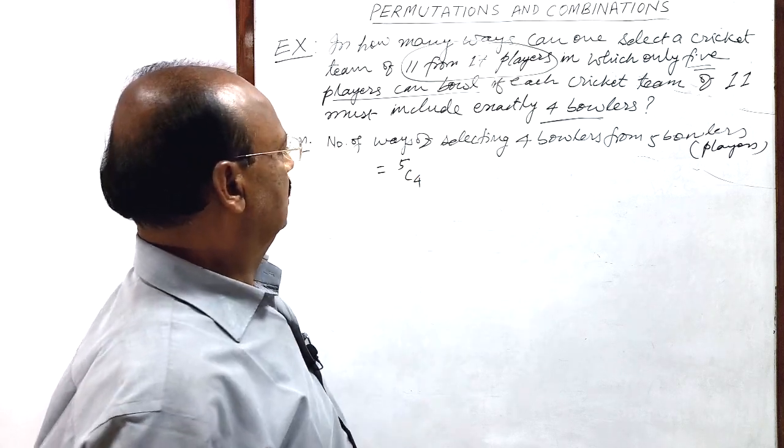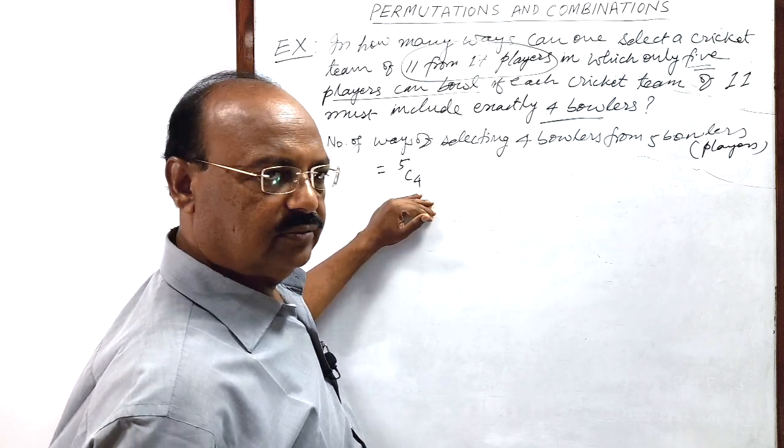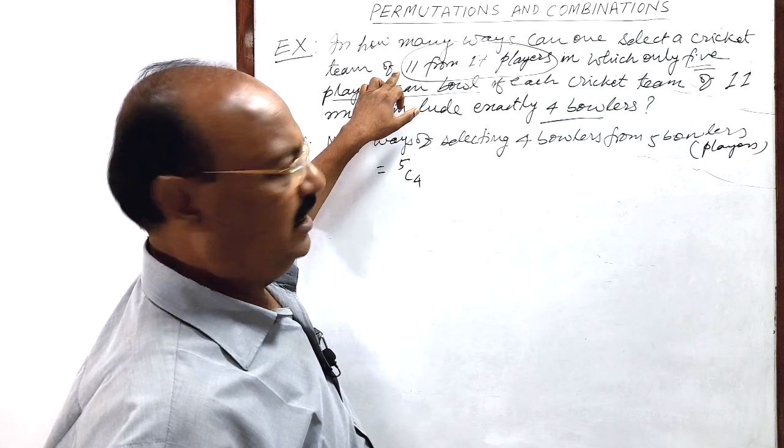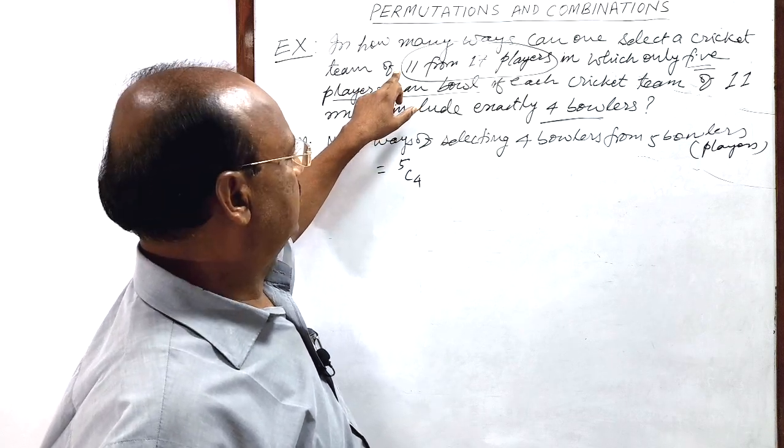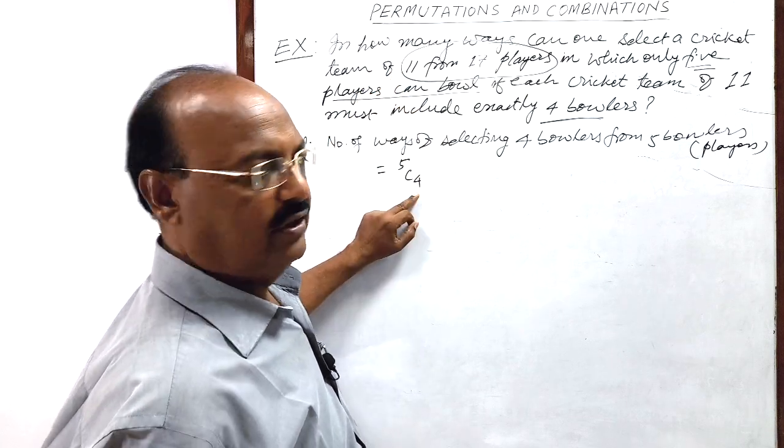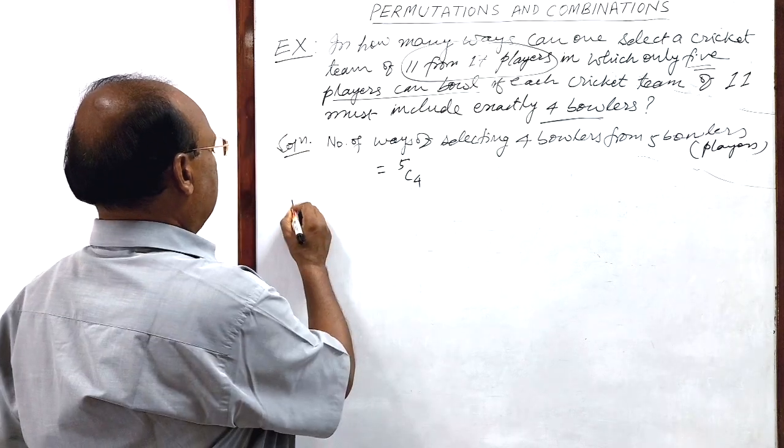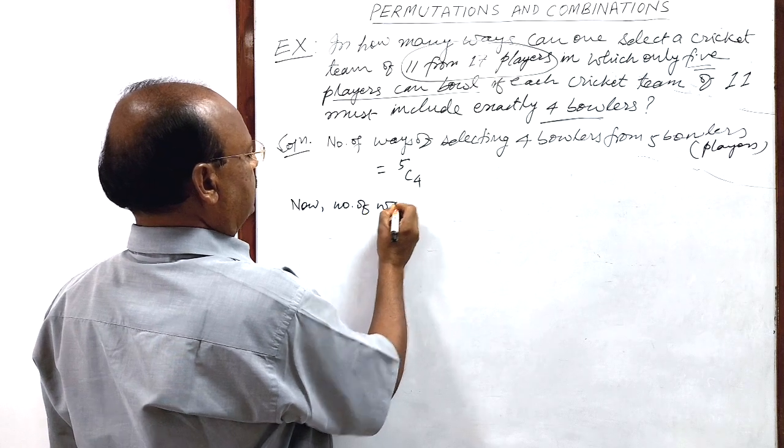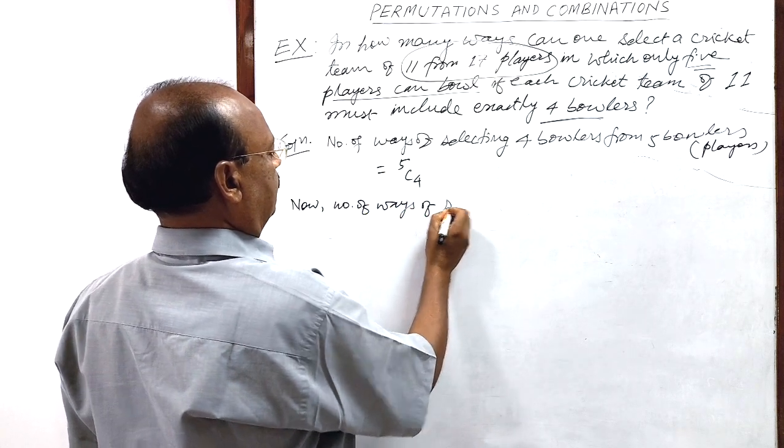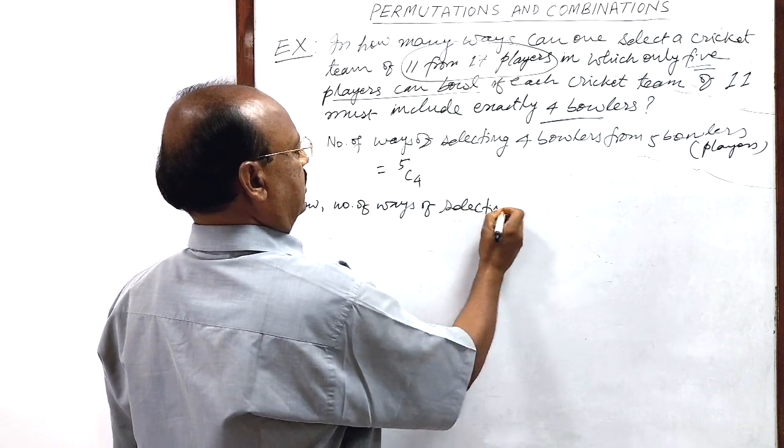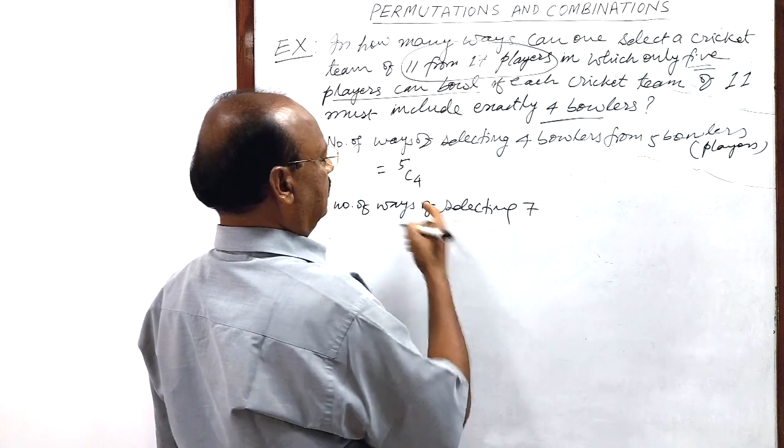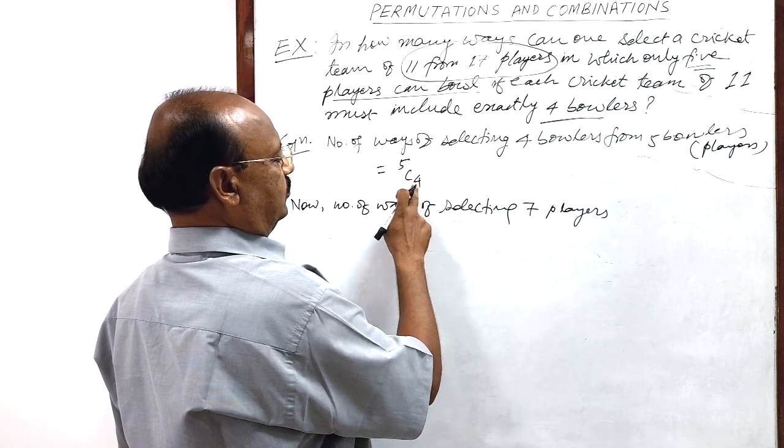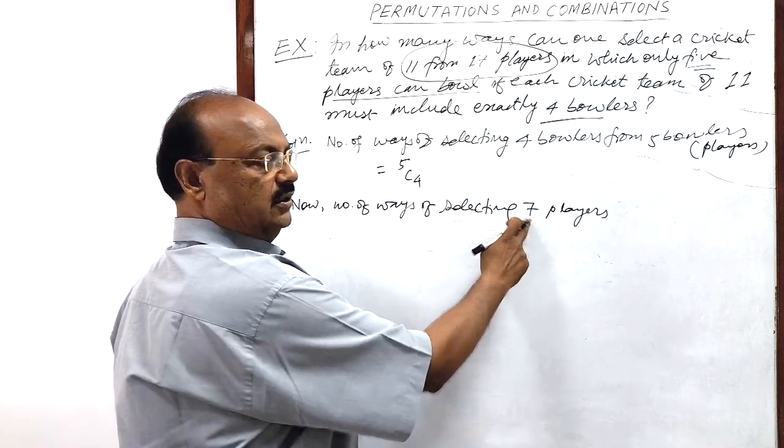Rest, you see here 4 players have been selected. We have to make a team of 11. So how many selections remaining here? 7. So now number of ways of selecting 7 players, since 4 plus 7 is 11.